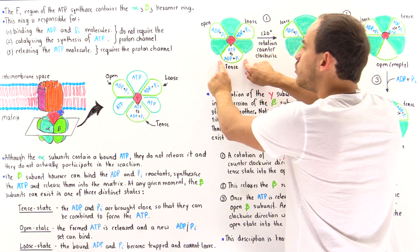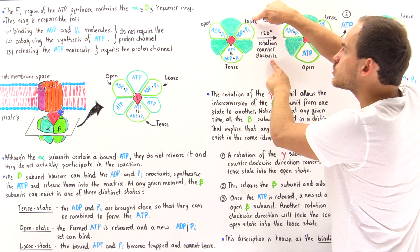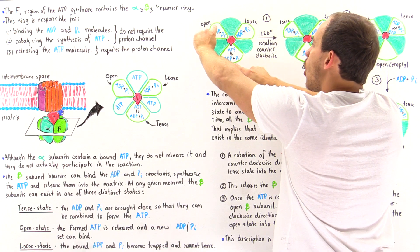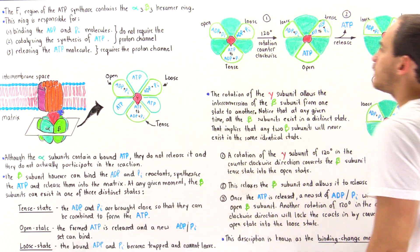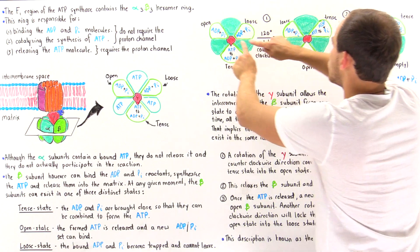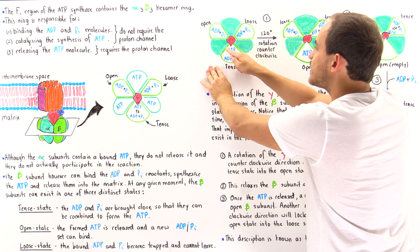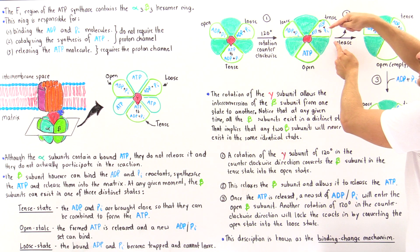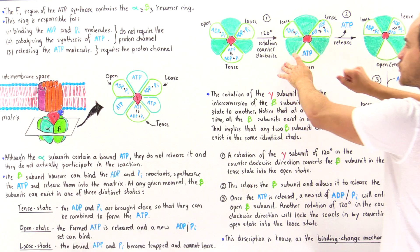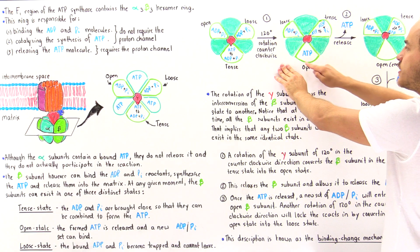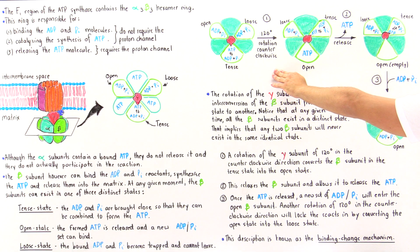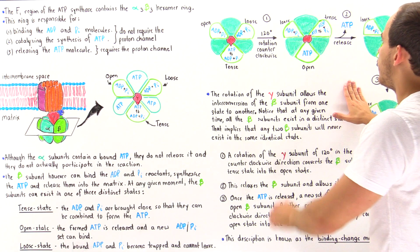All three beta subunits switch their conformations simultaneously. The one that was in the Tense state becomes Open, the one in the Loose state becomes Tense, and the one in the Open state becomes Loose. Once this rotation takes place, the ATP synthesized in the Tense state can now leave, as that subunit is now in the Open state. That ATP molecule is released into the matrix of the mitochondria.